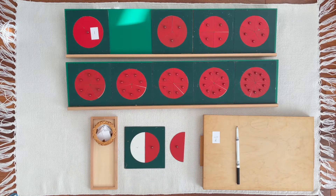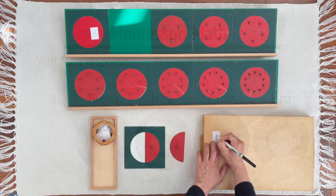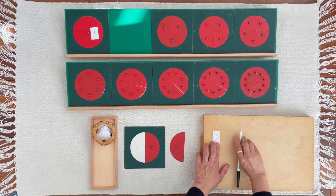How many members of the family of two did I place on the map? Yes, one.